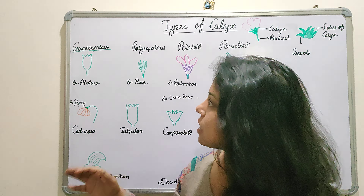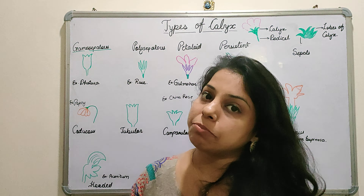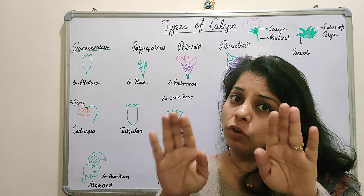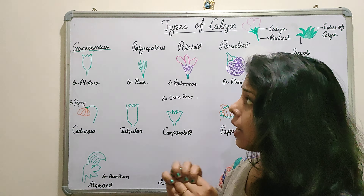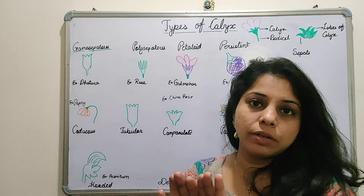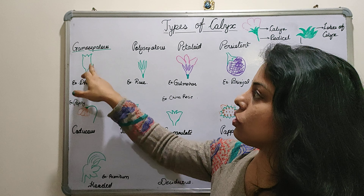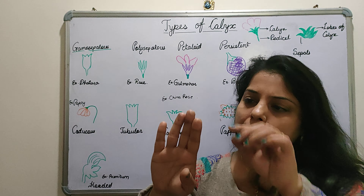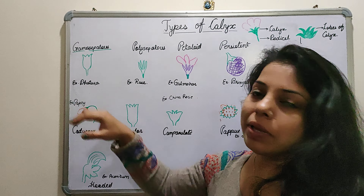Now let's start the types of calyx. The first one is Gamosepalous. As we know, 'gamo' means fused, meaning fusion. So in gamosepalous, the sepals are fused together and form a cup-like structure. The tips remain distinct while the lower portions are joined. This condition you will get to see in many garden flowers.